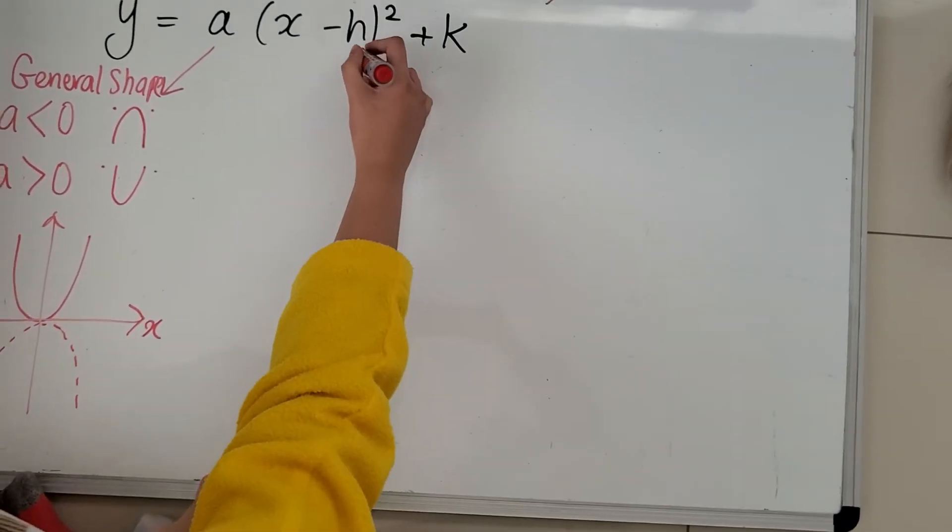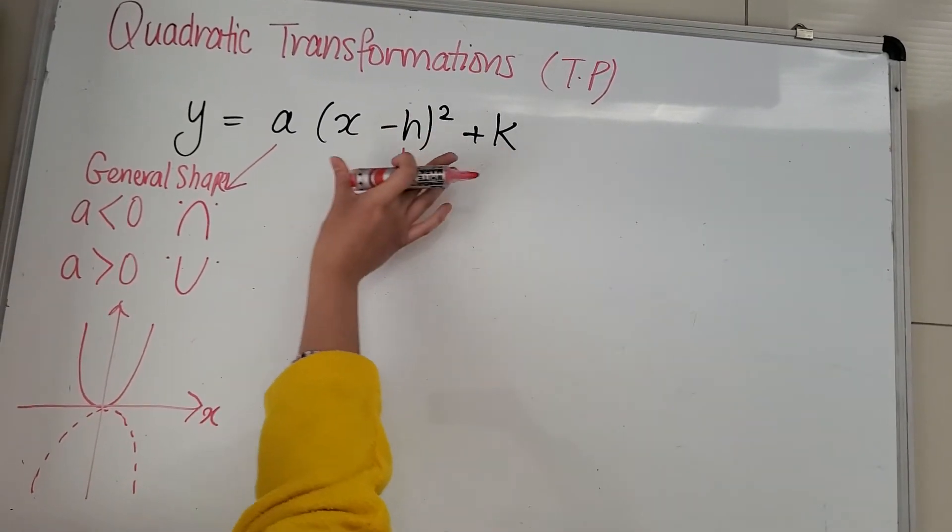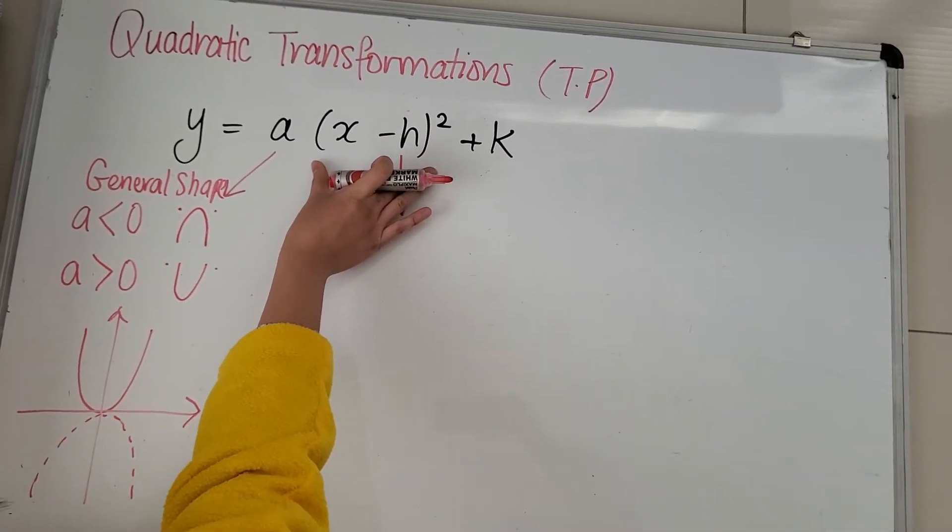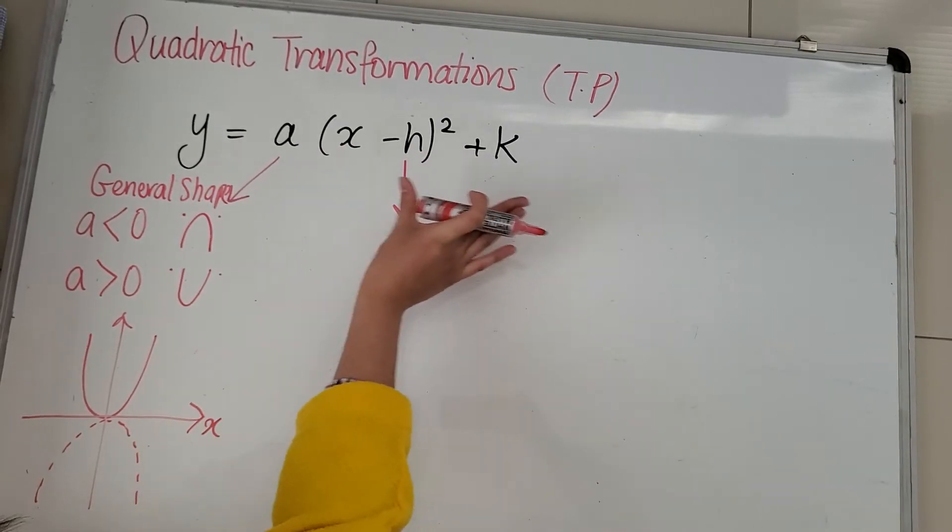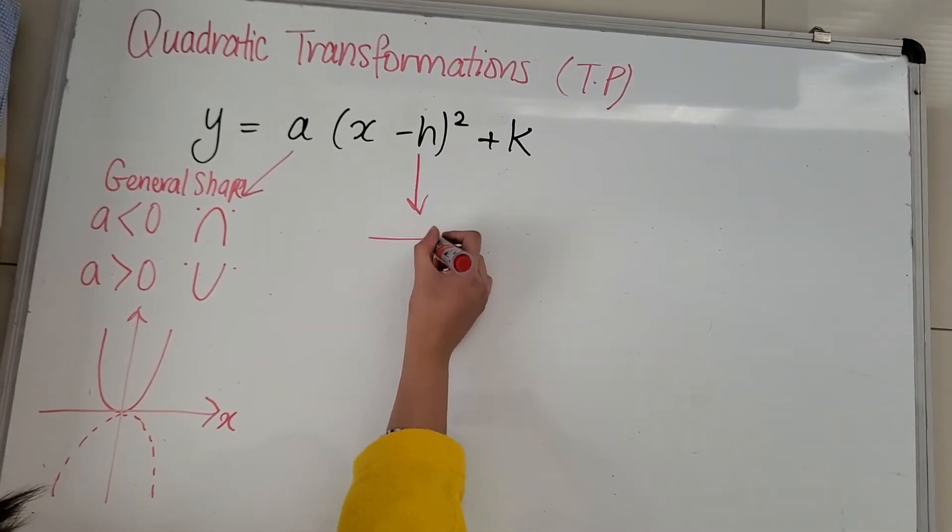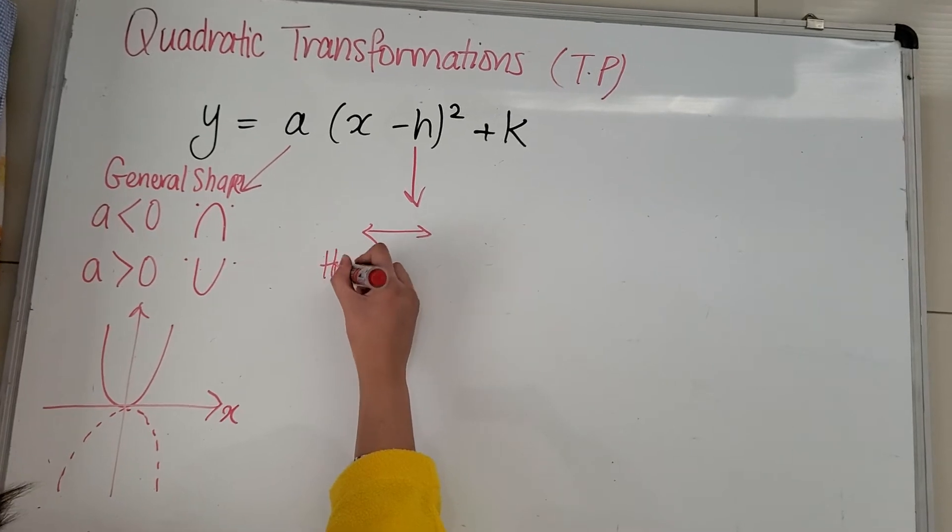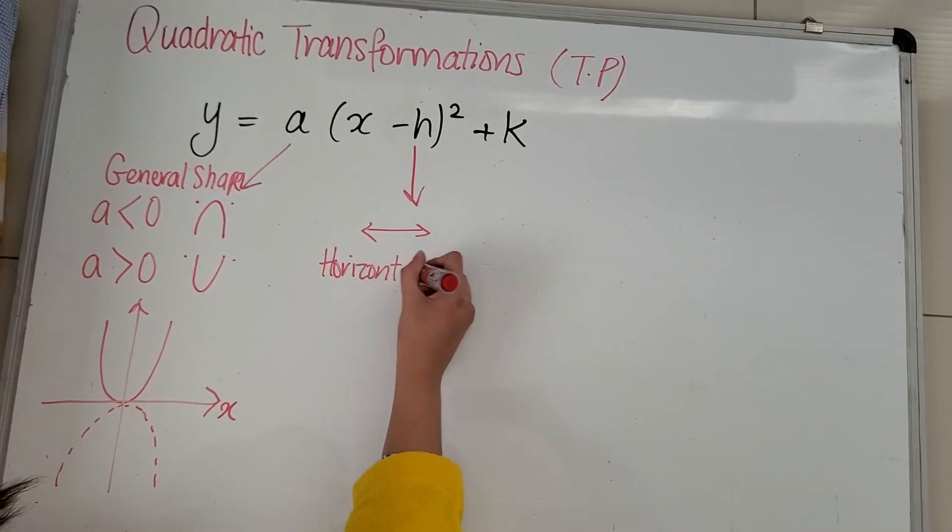Next, your h tells you, because it's part of your x, it's within, it's part of your x. So it tells you your x translation. So it moves left to right, horizontal. So your X axis translation.